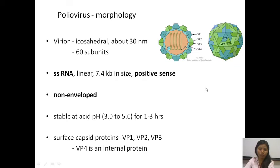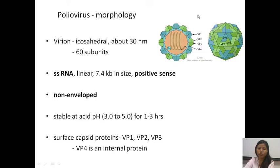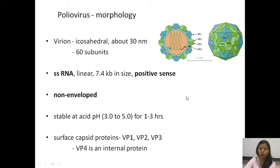Poliovirus within the Picornaviridae family is a picornavirus — very small in size, about 30 nanometers, with icosahedral symmetry. Its genome is single-stranded positive-sense RNA, which is linear. It is a non-enveloped virus, stable at acidic pH, with surface capsid proteins VP1, VP2, VP3, and internal protein VP4. The majority of viruses transmitted through the fecal-oral route are non-enveloped because envelopes are labile — they dissolve with detergents or acids — and their stability in acidic gastric pH allows them to establish infection in the gastrointestinal tract.